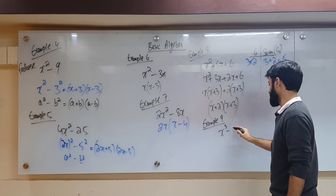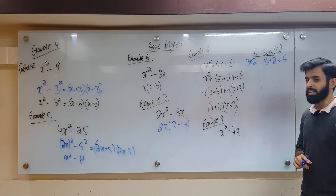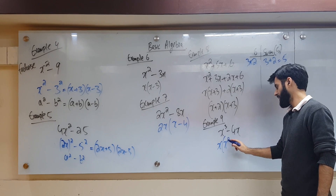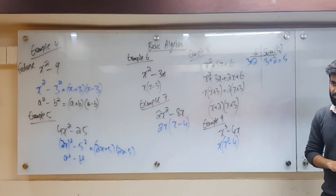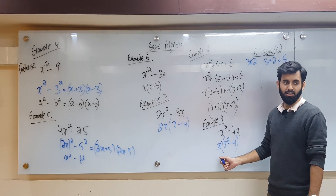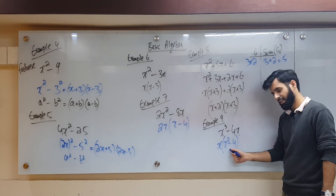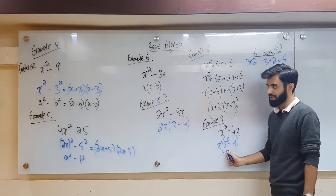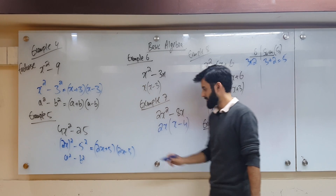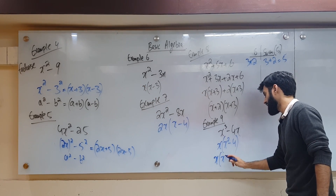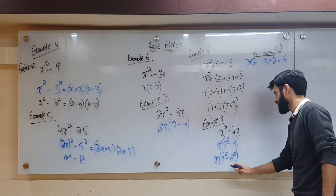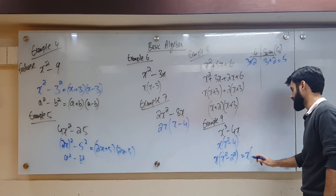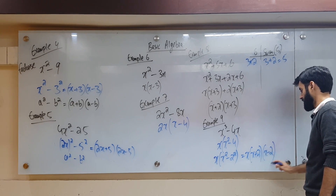Let me make it slightly more difficult. Is there something I can take common? Yes — take x common, giving x times x squared minus 4. Is this the end? Can you factorize further? Of course you can! You see two terms with a minus sign, and both are perfect squares. Can I write x squared minus 4 as x squared minus 2 squared? Yes. So using a squared minus b squared equals a plus b times a minus b, this becomes x times x plus 2 times x minus 2.